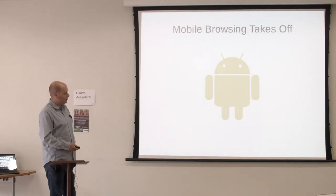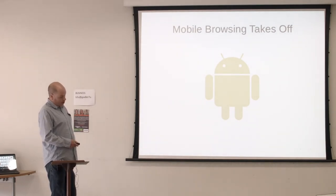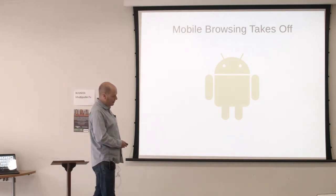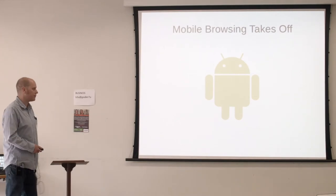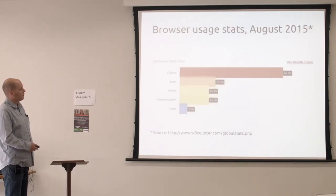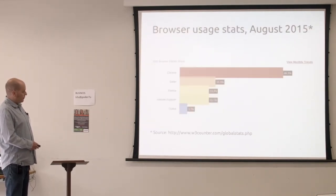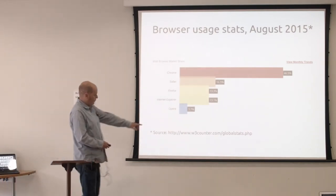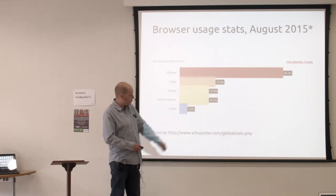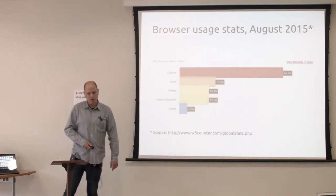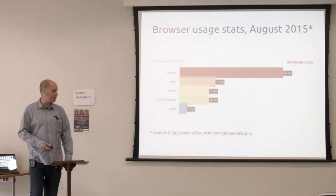Mobile browsing has taken off. Android may not quite be Linux, but it's more standards- and open-source-based than iOS, and it is dominating. And just to ram the point home, we can see that from the 94% Internet Explorer had in 2004, we're now down to 13% — and this is the current usage stats for this month.